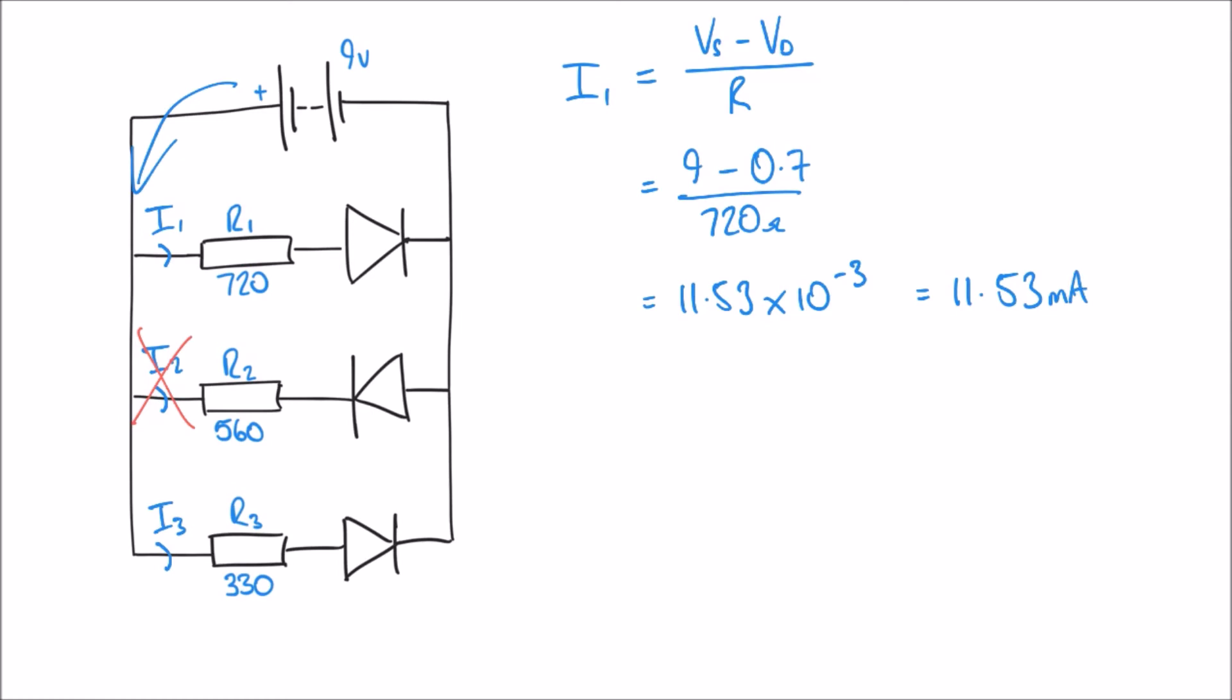I2 is something we don't even need to calculate because we know that diode is in reverse bias. It's not going to allow current to flow, so I2 is 0 milliamps.